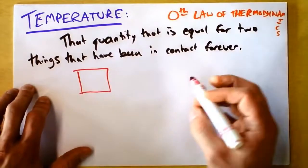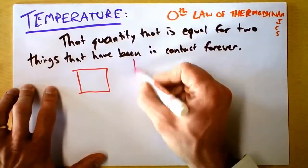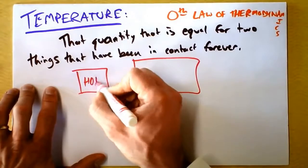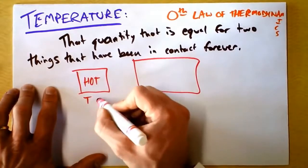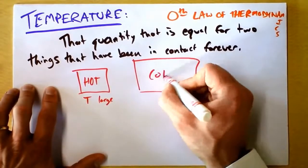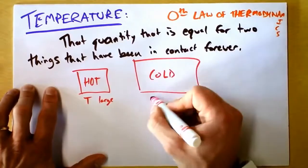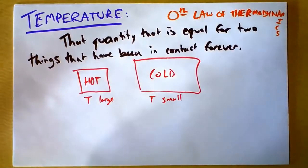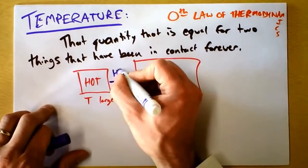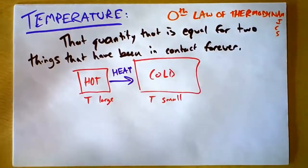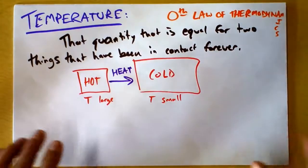So I'm going to just draw a little picture of this. This is a hot thing because it has T large, and this is a cold thing because it has T small. And heat's going to go that way — from the hot thing to the cold thing. So that's our definition of temperature right now.